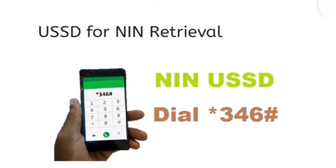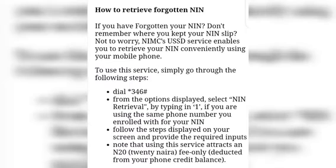If you have forgotten your national identification number name or can't remember where you kept your NIN slip, not to worry. National Identity Management Commission USSD service enables you to retrieve your name conveniently using your mobile phone. To use this service, simply go through the following steps.